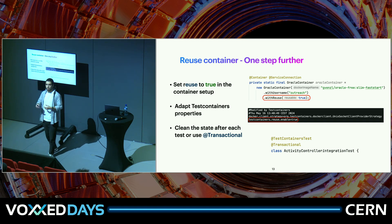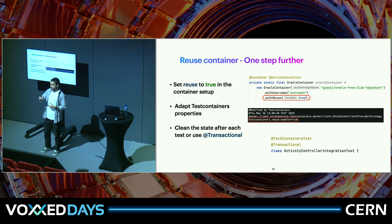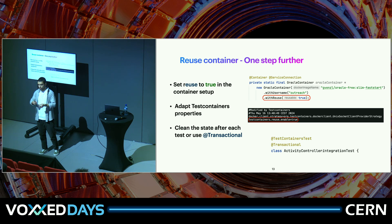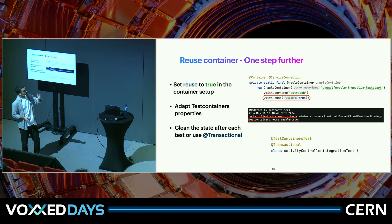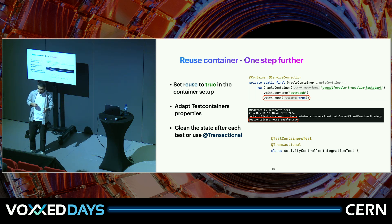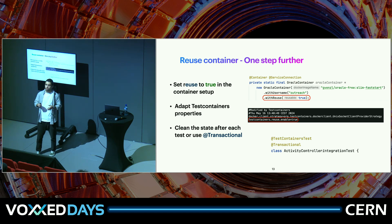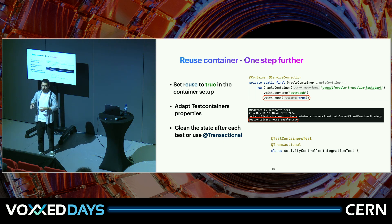We can also take it a step further with container reuse. In a CI pipeline, the test suite runs once — but during development, you might be running tests repeatedly. There's no need to create and start a new container every time. With reuse, a container is kept alive between runs and reused as needed. To enable it, call .withReuse(true) on the container, and set testcontainers.reuse.enable=true in the testcontainers.properties file.